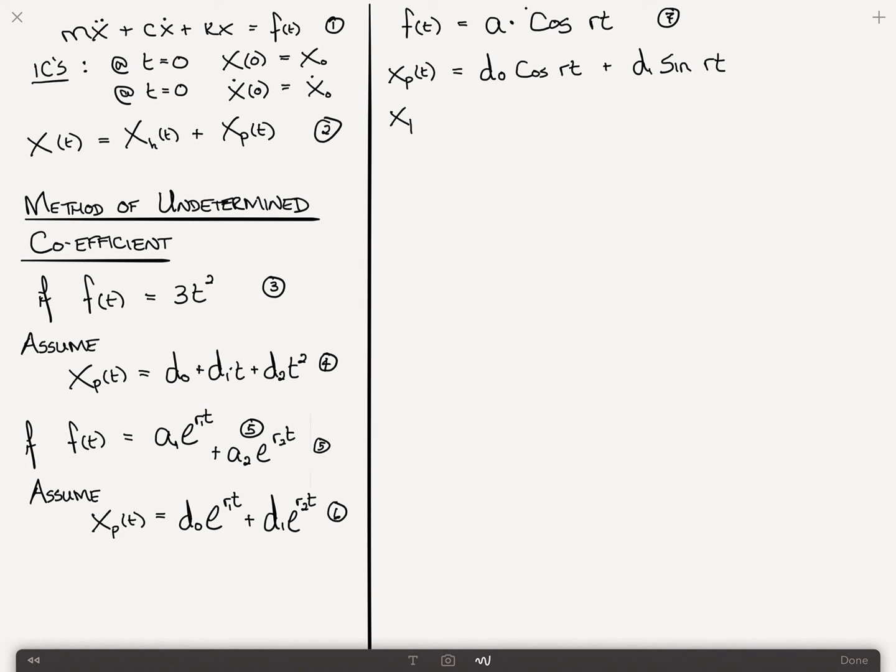Based on this, if I take the first derivative x_p dot of t, that's equal to, well, cosine becomes minus r sine, so minus r d0 sine rt plus r d1 cosine rt. If I take another derivative, x double dot p of t is equal to minus r squared d0 cosine rt minus r squared d1 sine rt. We'll call this 8, 9, and 10.